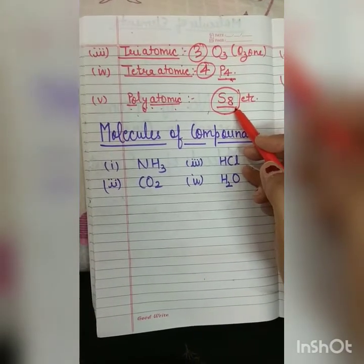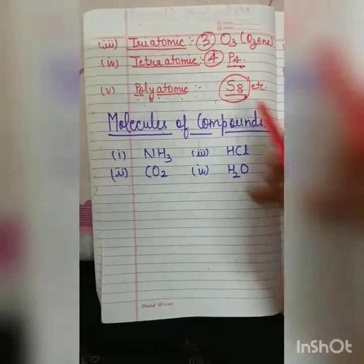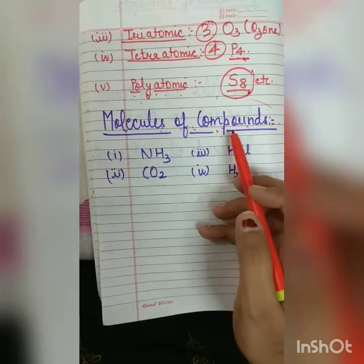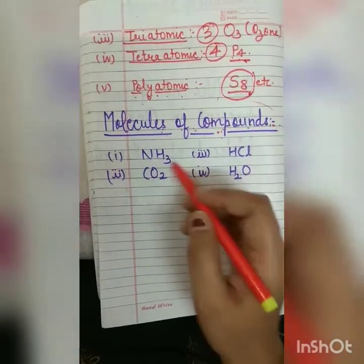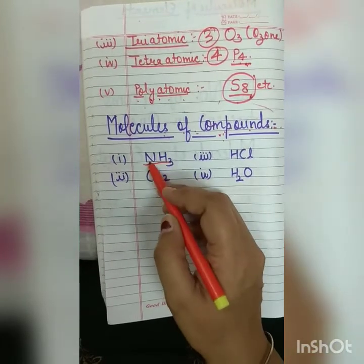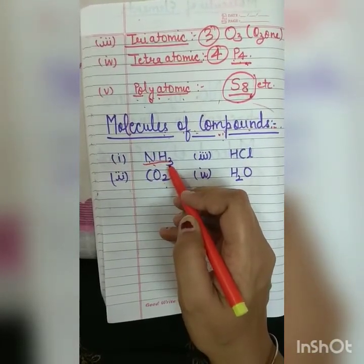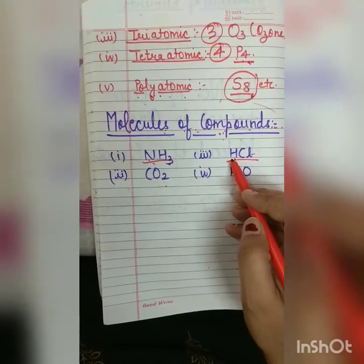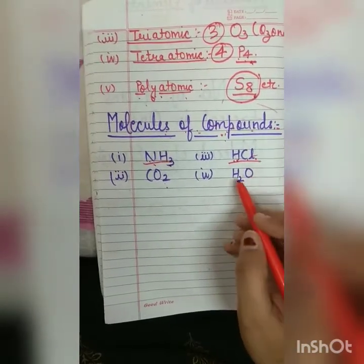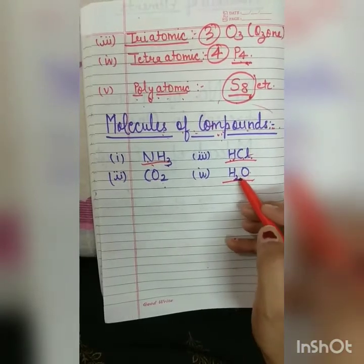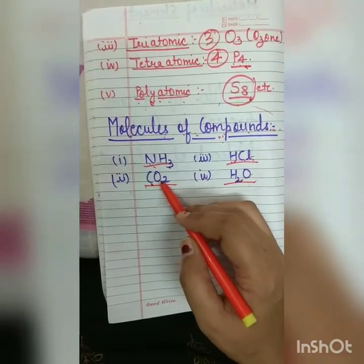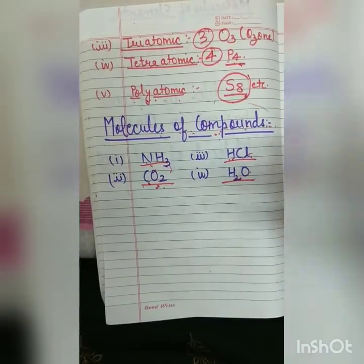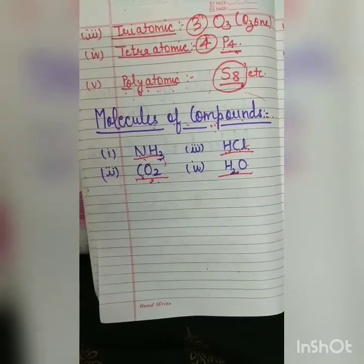I hope you have understood how the molecules of elements are formed. The next we are having molecules of compounds. The molecules of compounds are formed when the two or more than two atoms of different elements combine together chemically. For example, NH3, ammonia — here one atom of nitrogen is combined with three atoms of hydrogen. In HCl, hydrochloric acid, one atom of hydrogen is combined with one atom of chlorine. Water: two atoms of hydrogen combined with one atom of oxygen. One atom of carbon combined with two atoms of oxygen. When the atoms of different elements combine together, the molecules of compounds are formed.